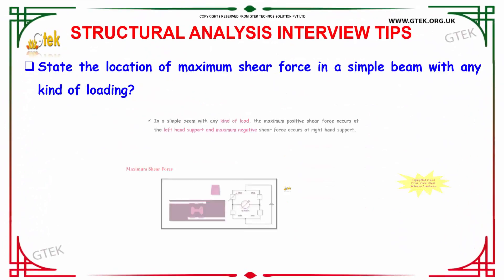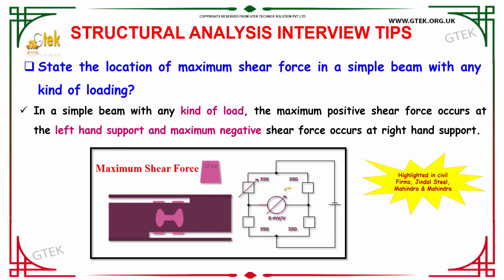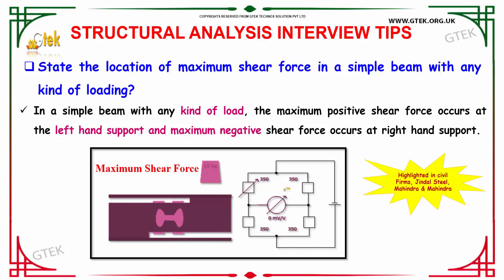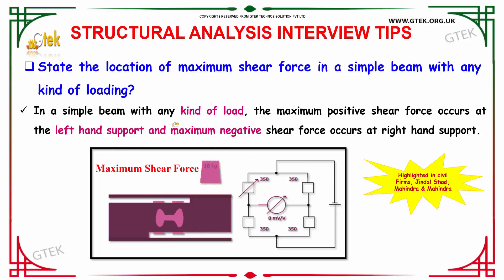The next question is: state the location of maximum shear force in a simple beam with any kind of loading. In a simple beam with any kind of load, the maximum positive shear force occurs at the left-hand support and the maximum negative shear force occurs at the right-hand support.